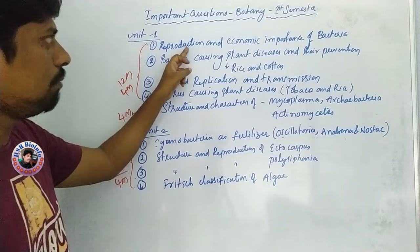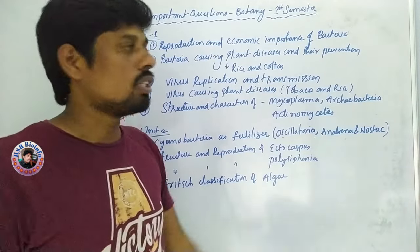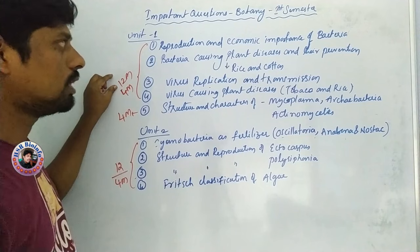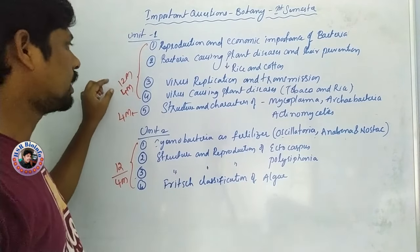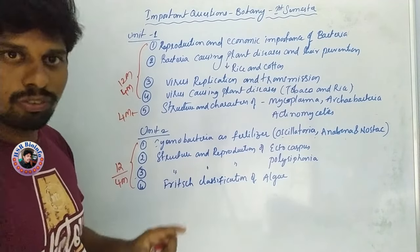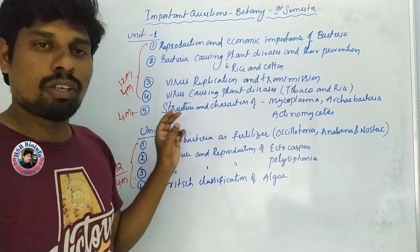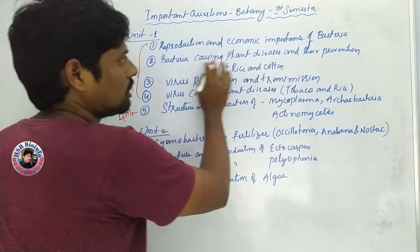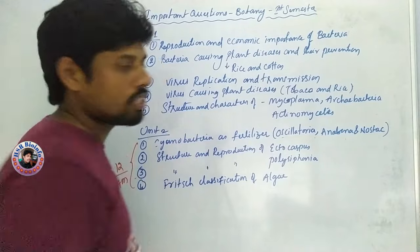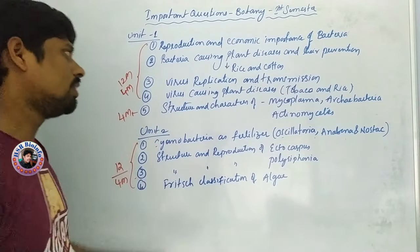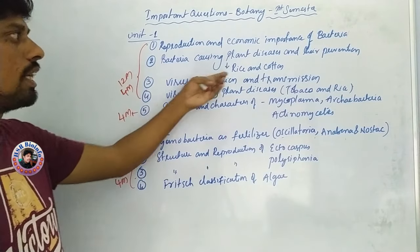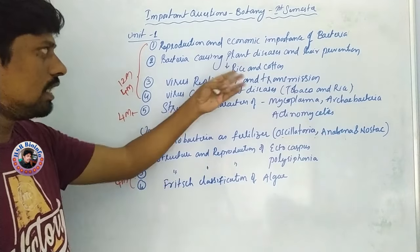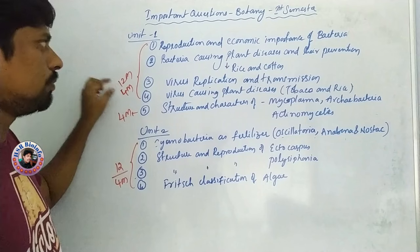First, we have reproduction and economic importance of bacteria — that is a 12-mark question. Reproduction in bacteria is 4 marks. Economic importance of bacteria is 4 marks. Bacteria causing plant diseases and their prevention is also a 12-mark question, especially rice-related diseases.